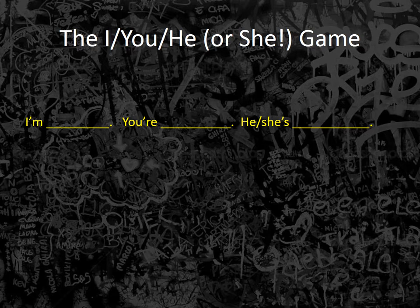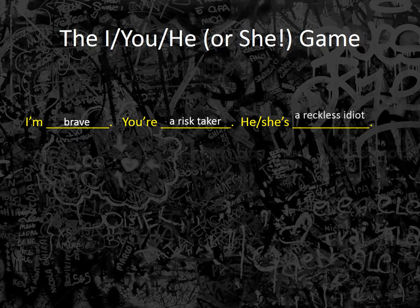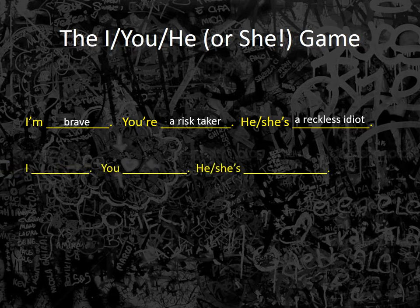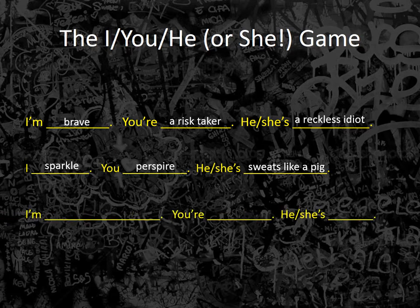One way to illustrate the difference in emotional content between words is the so-called I/You/He-or-She game. You apply a positive term to yourself, a more neutral or slightly negative one to a second person, and then a term with the same meaning but very negative connotation to a third person. For example: I'm brave. You're a risk taker. He's a reckless idiot. I sparkle. You perspire. He sweats like a pig. I'm lost in contemplation. You're distracted. He's oblivious.